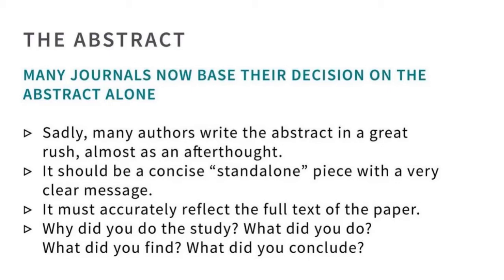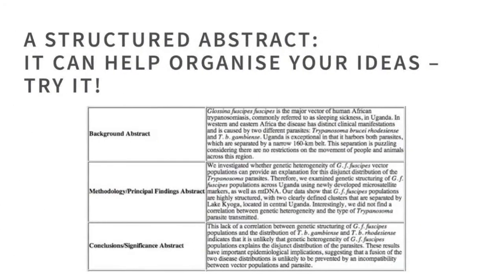Answer each of those four questions with one or two sentences, then delete the questions — and that gives you the structure of abstract writing in English. It's called a structured abstract. Many journals, as you'll see later — many Bentham Science journals — ask authors for a structured abstract. Even if your journal doesn't ask for one, you should still do it in order to effectively get your message across.